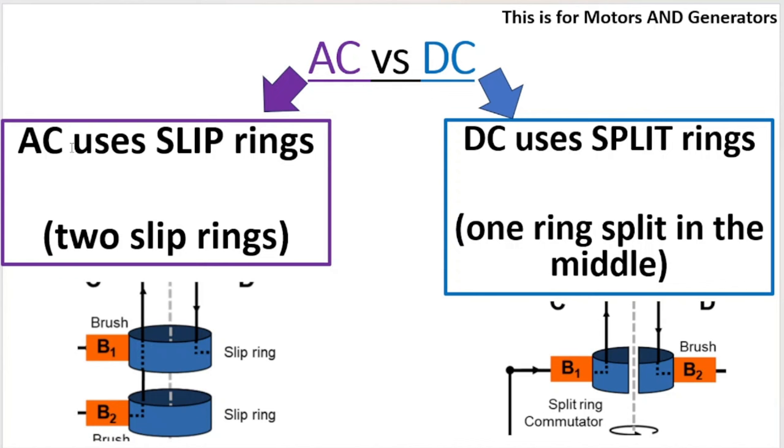An AC motor will make use of an AC power source. Okay, so AC motor, AC generator, both of those will have slip rings.